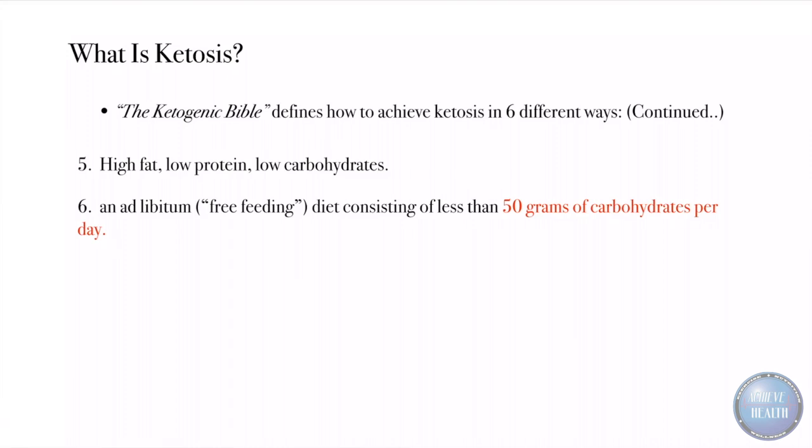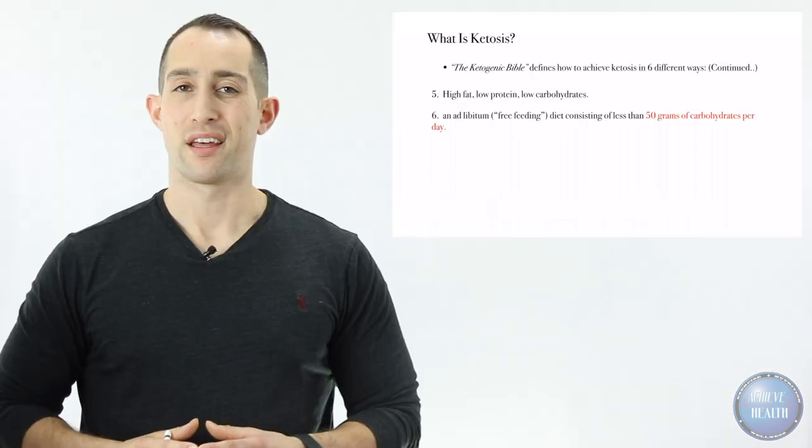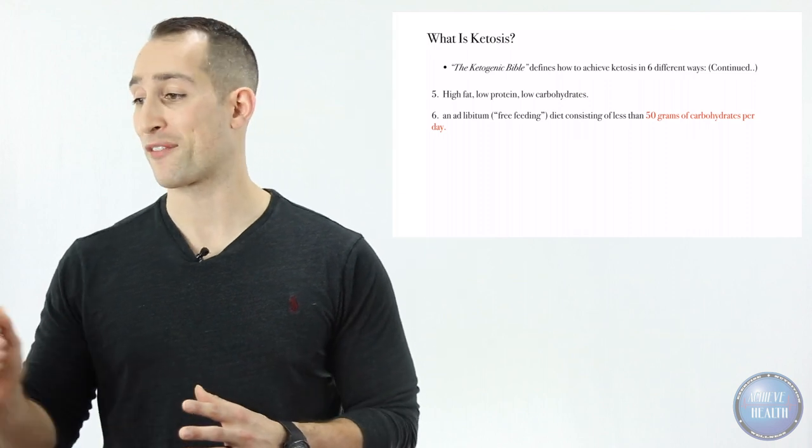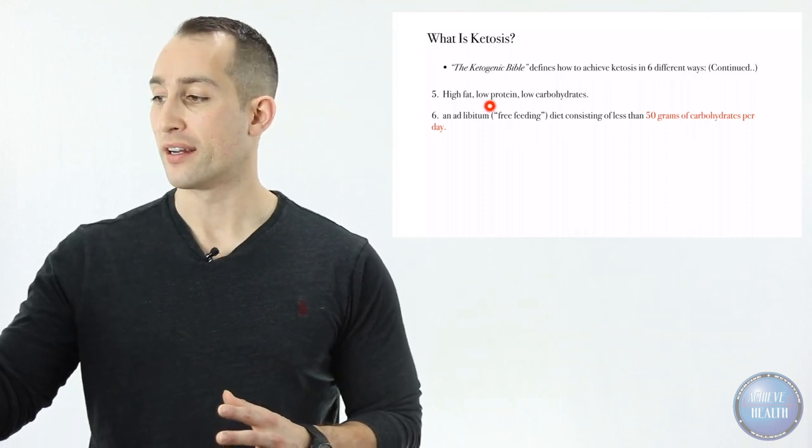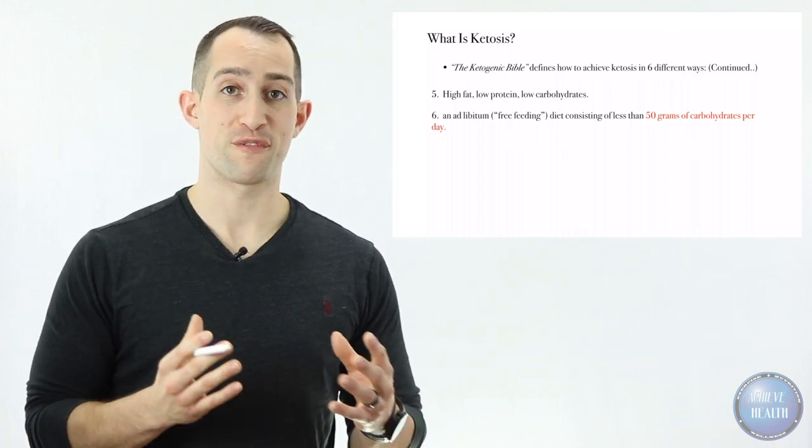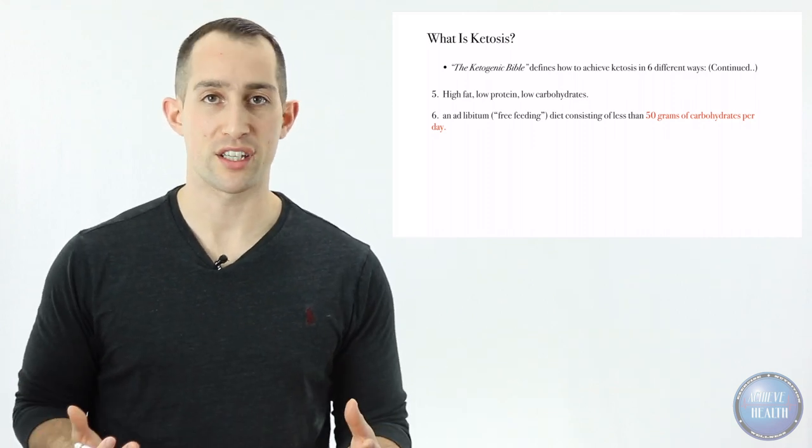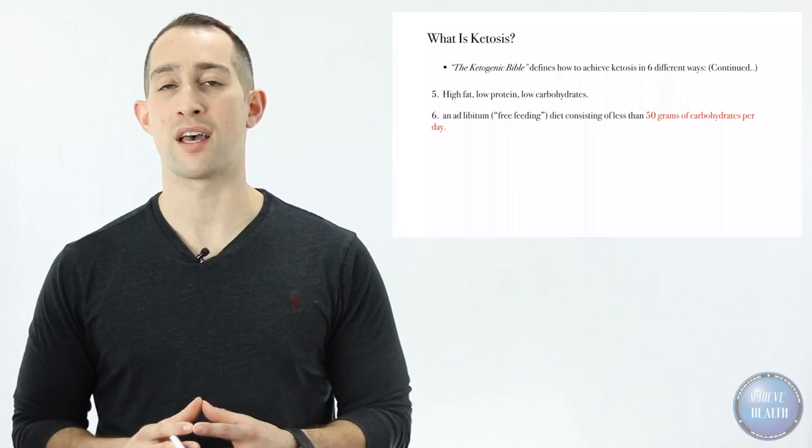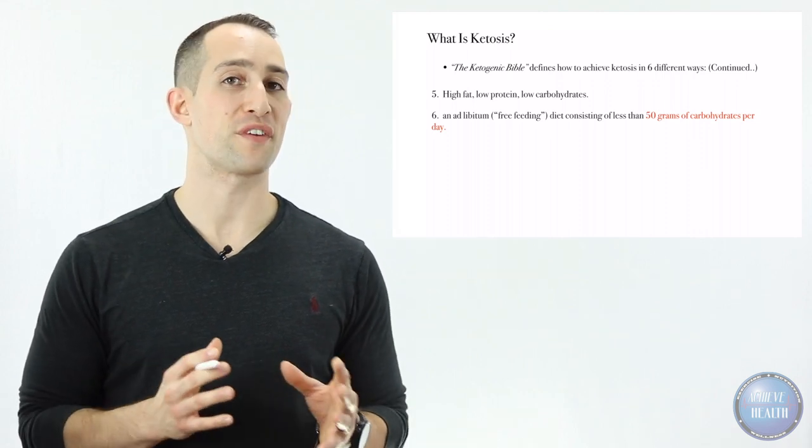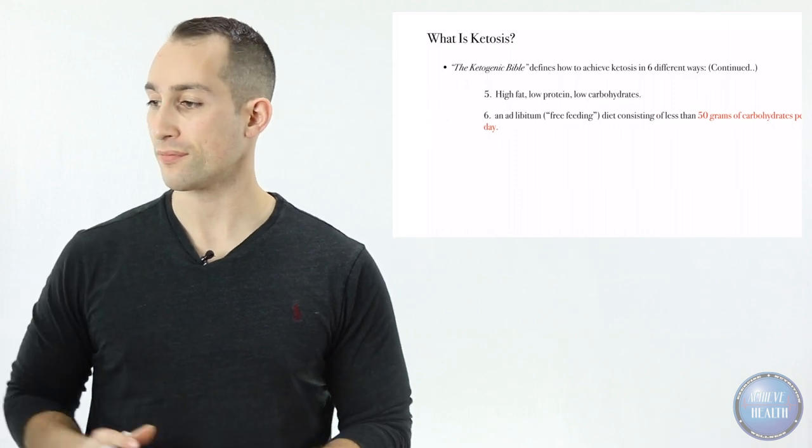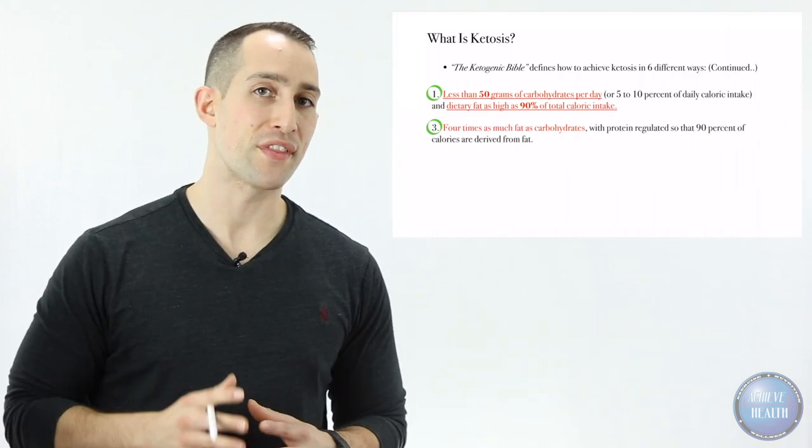Number six: an ad libitum or free feeding diet consisting of less than 50 grams of carbohydrates per day. This definition is a little bit vague. It gives us the 50 grams mark, however it's saying free feeding. Free feeding in terms of fat may be true, but for first timers, for anybody that's never gone into ketosis before, I wouldn't use the term free feeding for them.